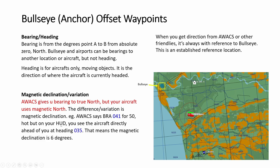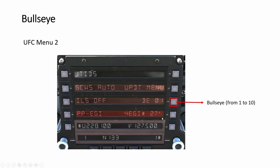Bullseye is referenced to true north. Bearings are used for bullseye and airports because they are fixed; heading is used for aircraft because they are moving. Maps always use true north, but magnetic north is different and it moves. So sometimes there is a difference — AWACS uses true north, so if they give you bearing 41, in your instrument you may see 35. This difference is magnetic declination. On menu 2 you select your bullseye number between 1 and 10.